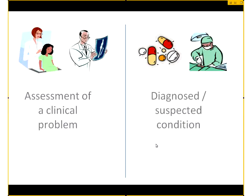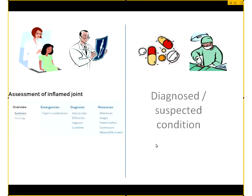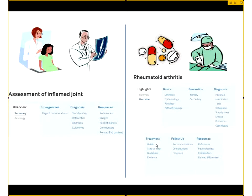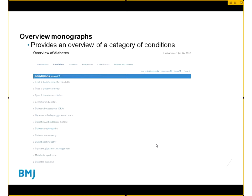There are two main types of topics on BMJ Best Practice. The first is the assessment topic, used for the assessment of a clinical problem or symptom — for example, assessment of inflamed joints. The second type is the condition topic, which has comprehensive information on a particular condition — for example, rheumatoid arthritis. There is also an overview topic or overview monograph, which provides a general synopsis of a group of conditions.